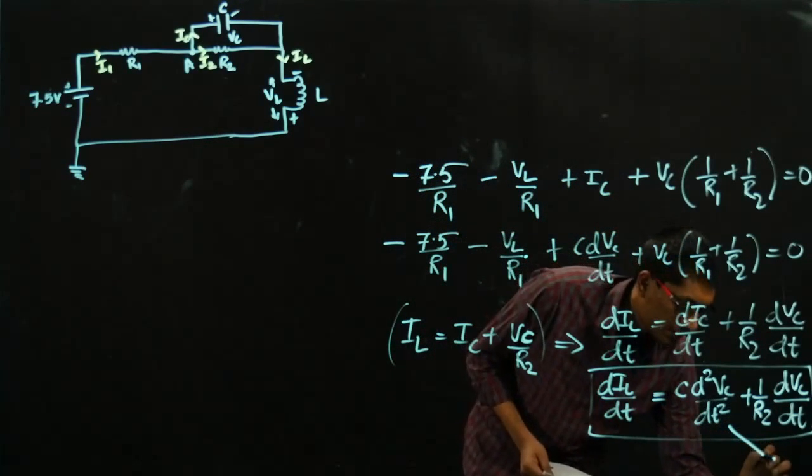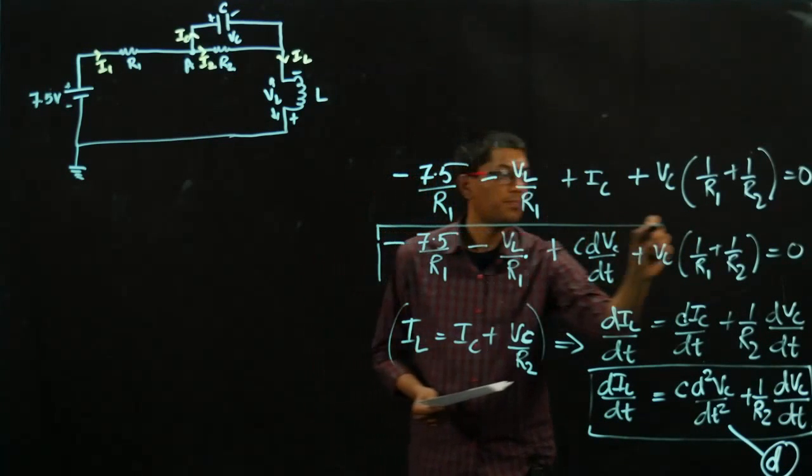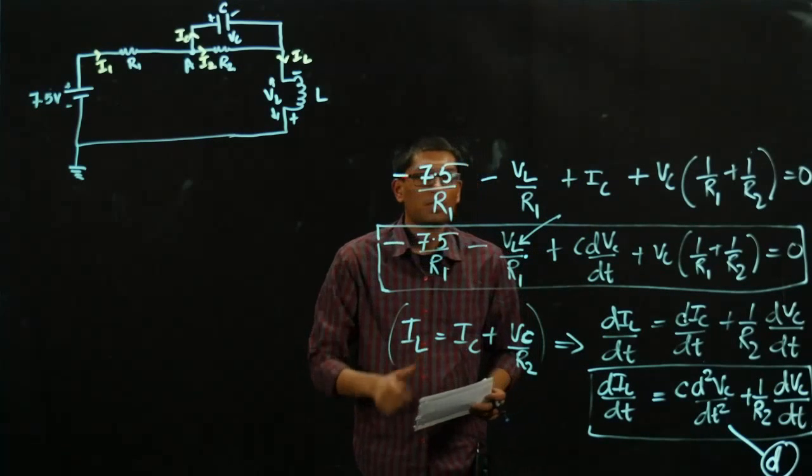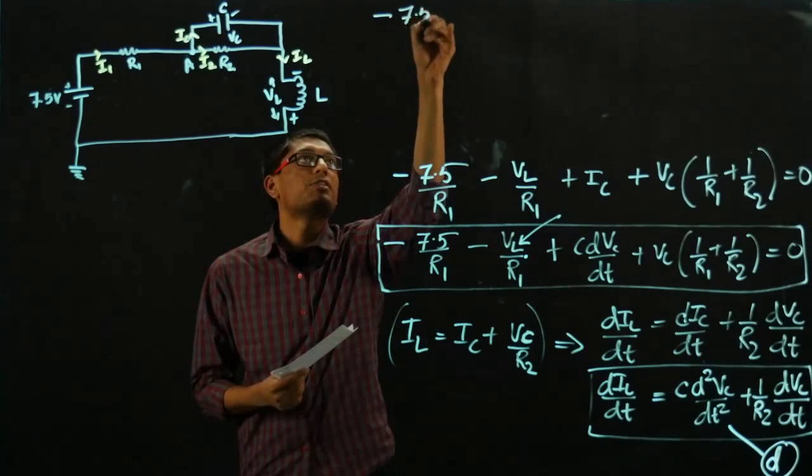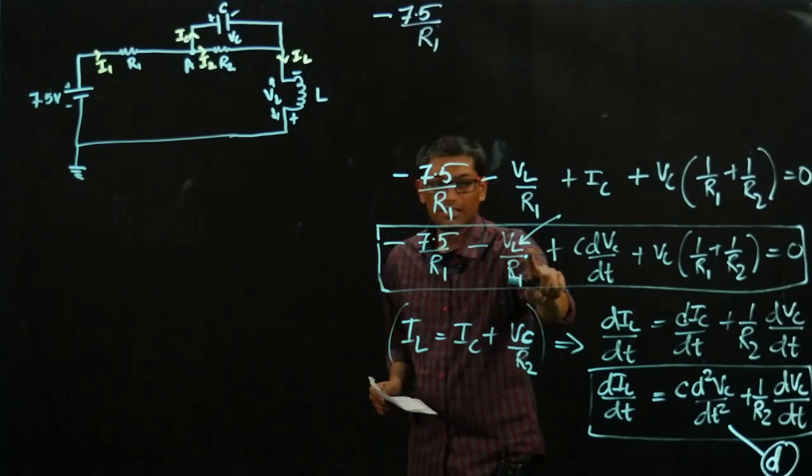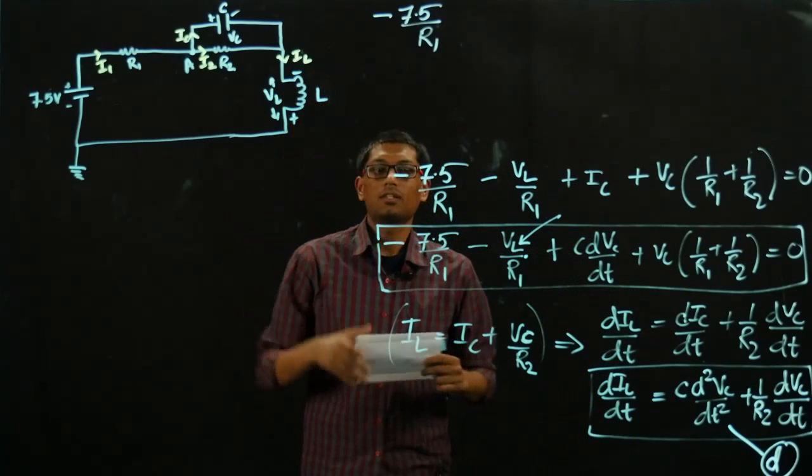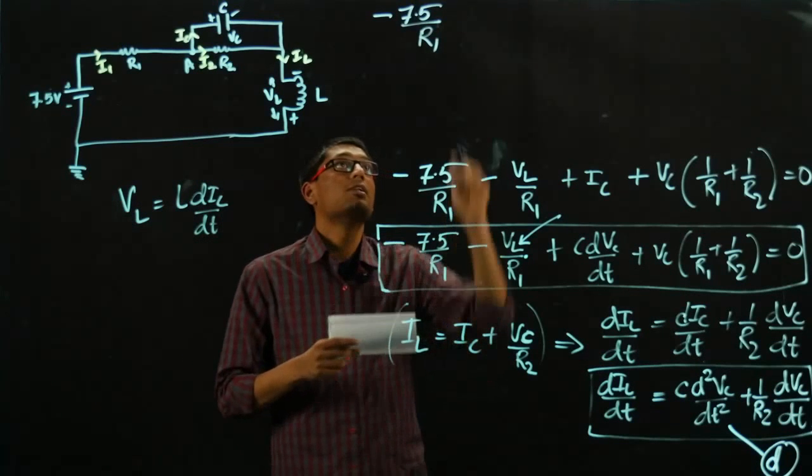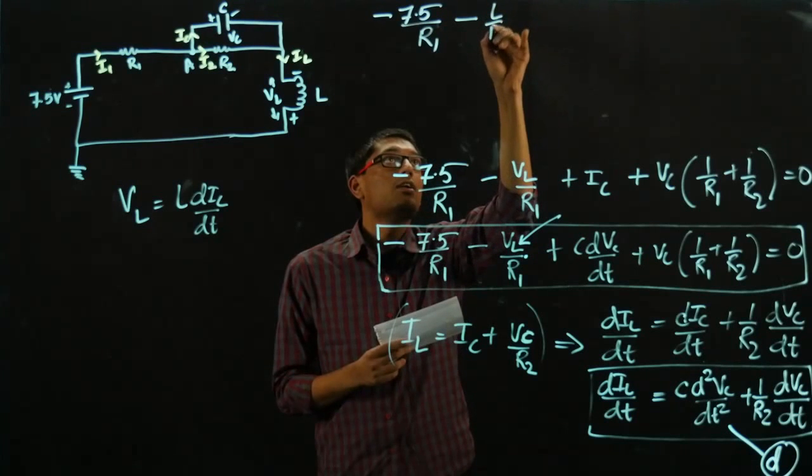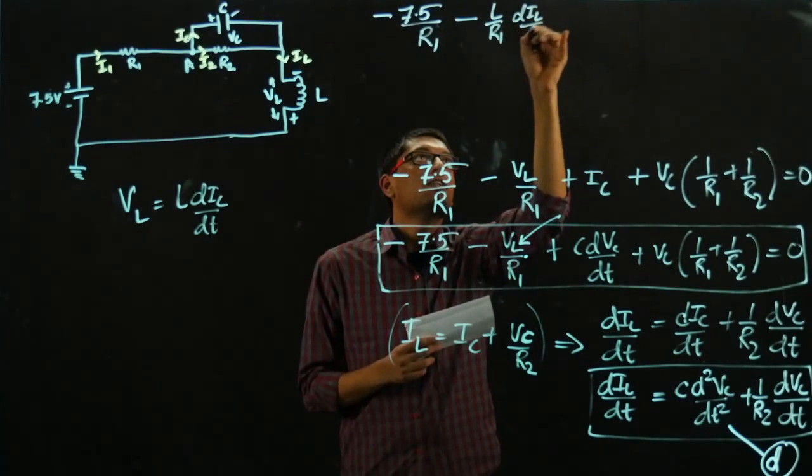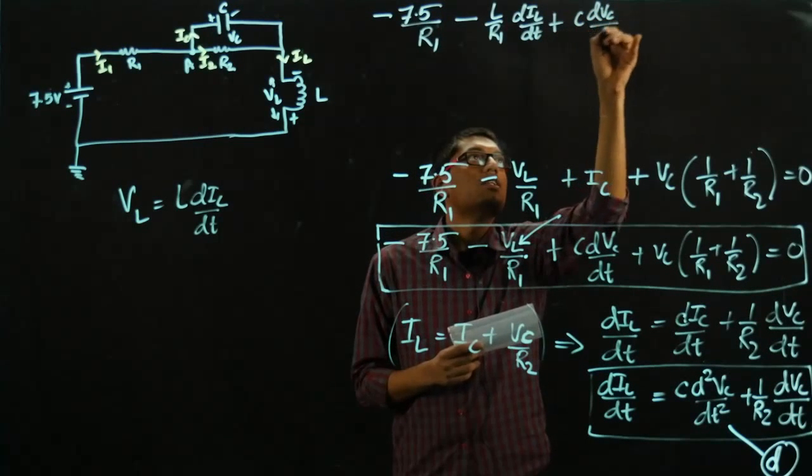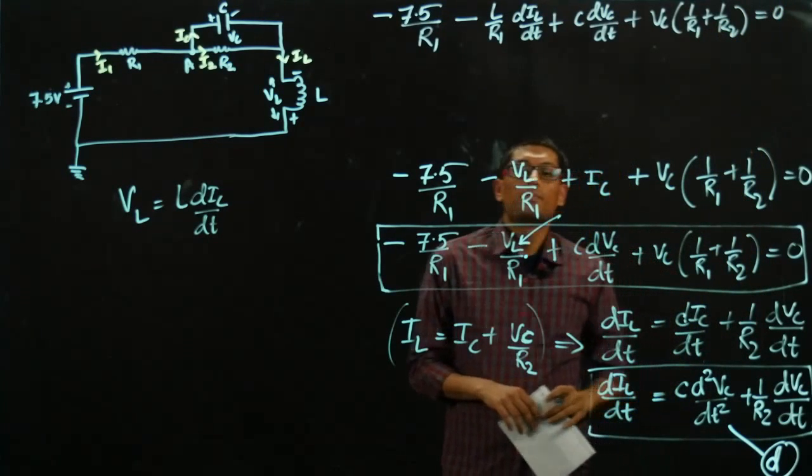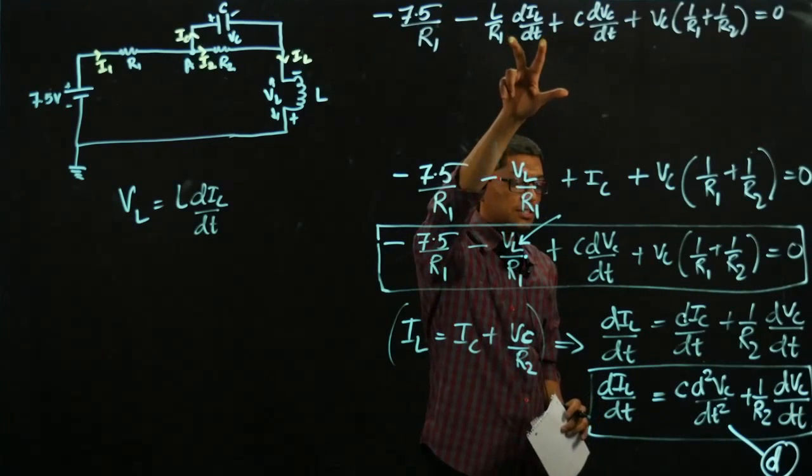Put this expression back into this equation that we had. So we have this equation. Let's call it D. And come back to this equation. Look at this term VL. This is also one of the variables that we need to eliminate. Minus of 7.5 over R1. Now realize that this is the inductor voltage. We can relate that to the current that's flowing through the inductor. Because VL is nothing but L dI/dt. So let's plug that expression in as well. So that gives me minus of L over R1 dIL/dt. Plus C dVC/dt. Plus VC over R1 plus 1 over R2, all summing to 0. Now I can replace dI/dt with these two terms here.